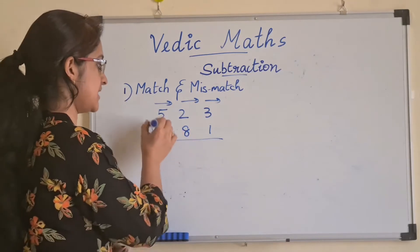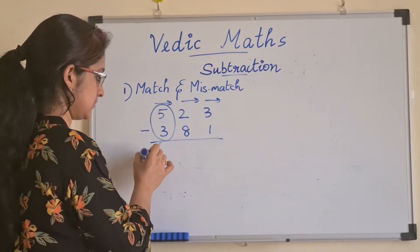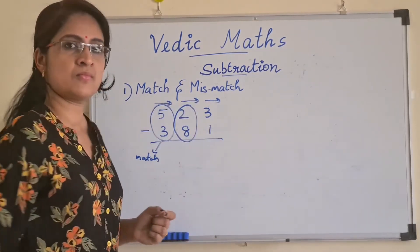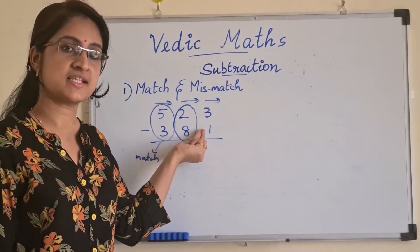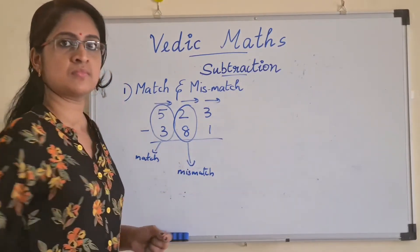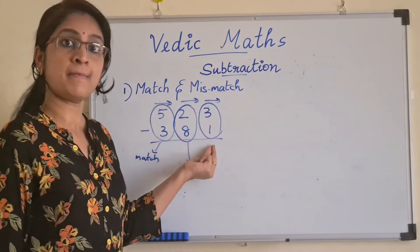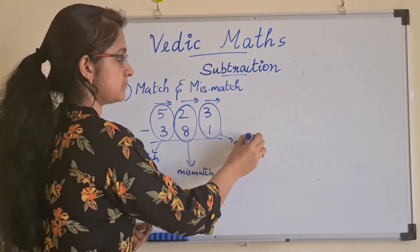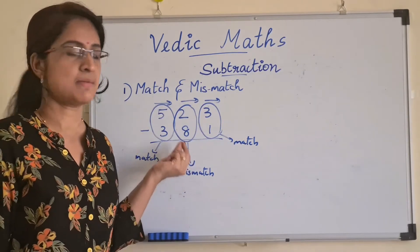So the first pair: 5 minus 3. The first number is bigger than the second number, so it is a matched combination. The second pair is 2 minus 3 — this is a mismatched combination. The third and final pair is again an example of a matched combination because the first number is greater than the second number. So the first step is to always identify whether each pair is a match or a mismatch combination.